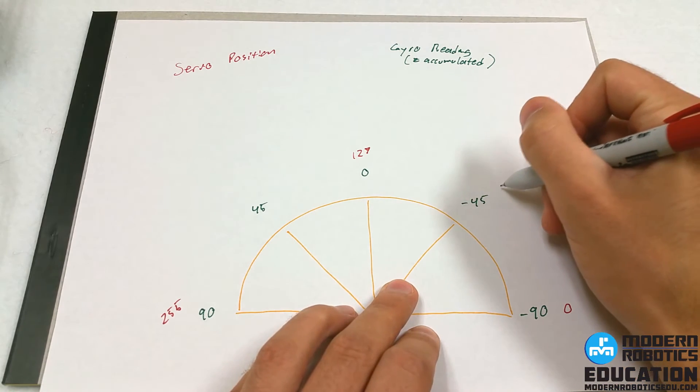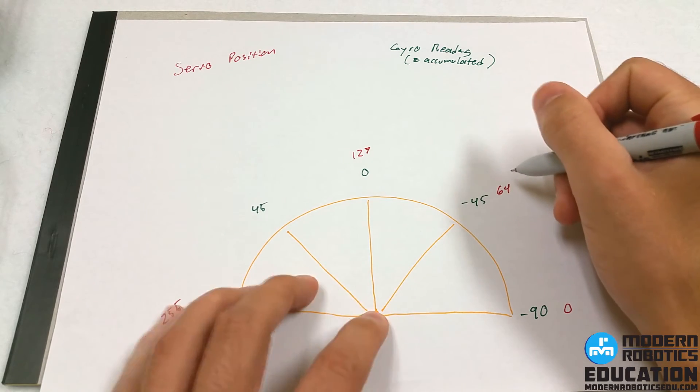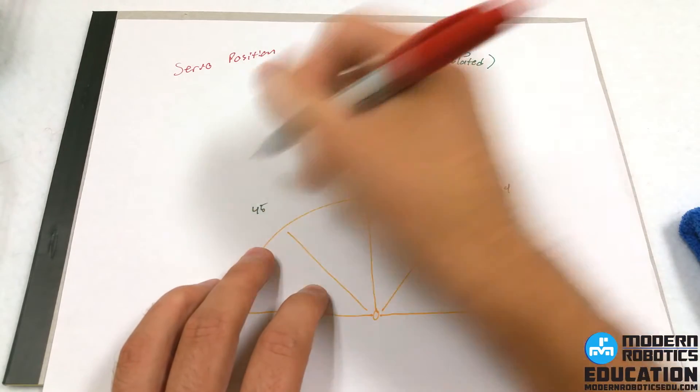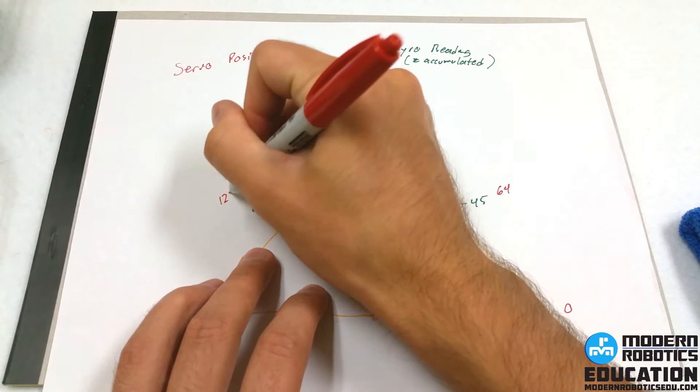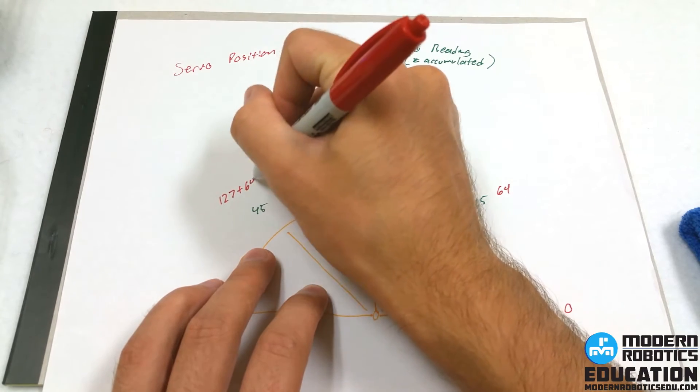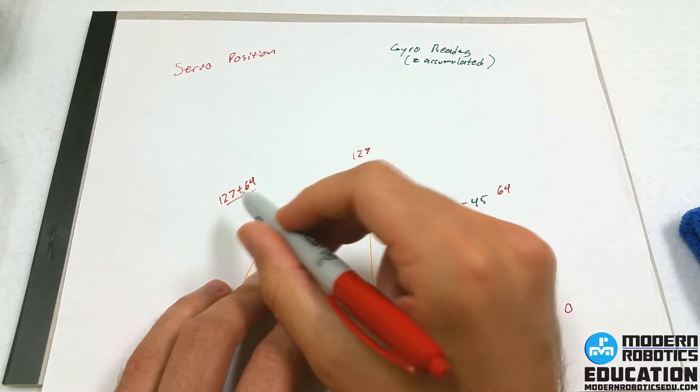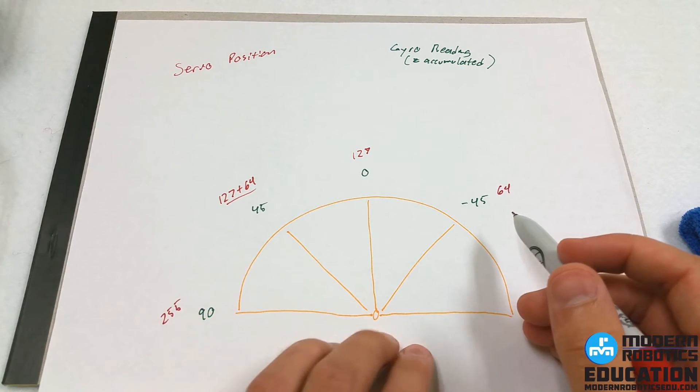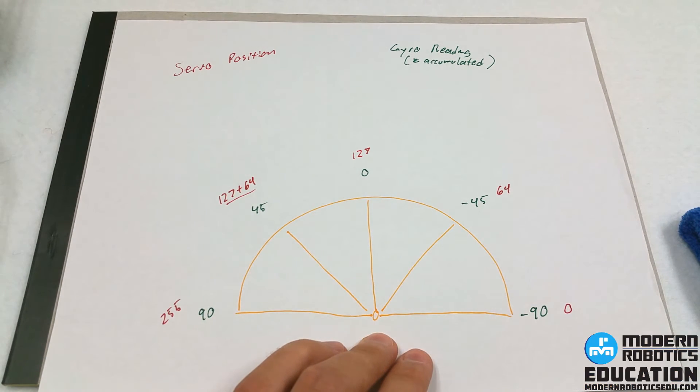So that would make this be 64 or 63 depending on how you're counting. And this is going to be 127 plus 64. That's actually how we're going to get to that value, so I'm not actually going to do the math on that one, because you shouldn't have to do the math on that one.